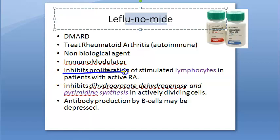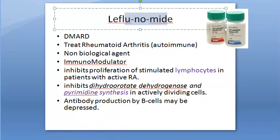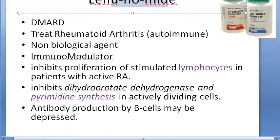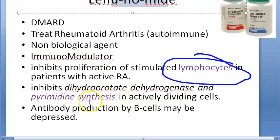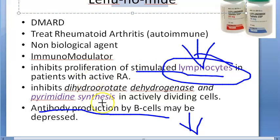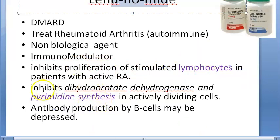What leflunomide does is it inhibits the proliferation of stimulated lymphocytes. It also decreases antibody production by B cells, so humoral immunity is reduced because the proliferation of stimulated lymphocytes is inhibited.